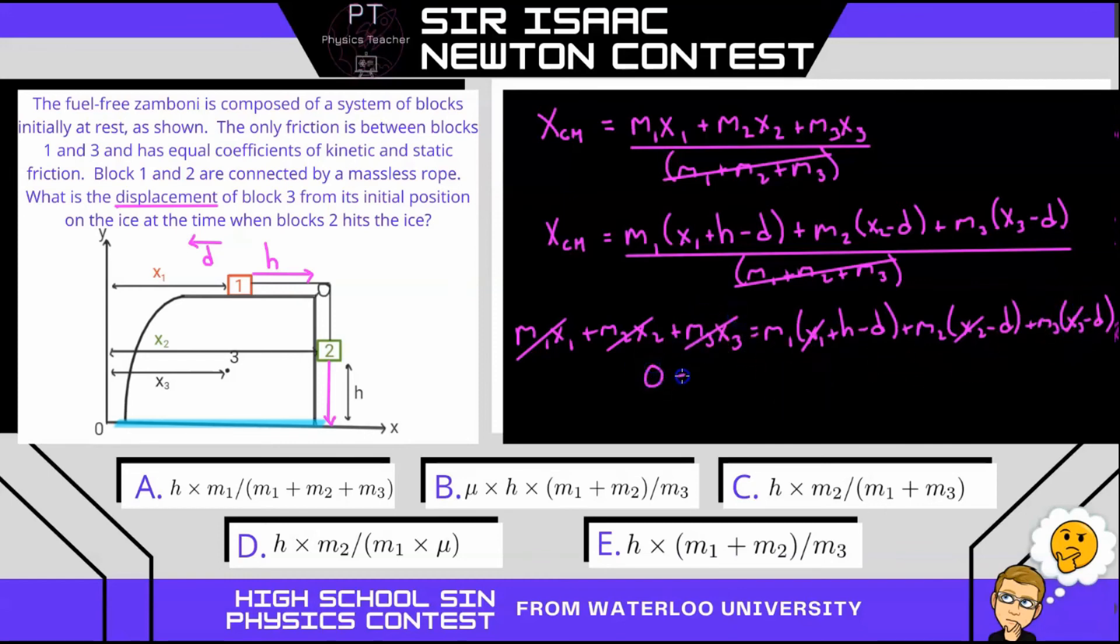So that leaves us with 0 equal to, and we just continue to expand the rest, so we have M1 H minus M1 D plus, well that's going to become a minus once we distribute it through, so minus M2 D and the same thing here, minus M3 D. We can collect like terms, and when we do that, we solve for D, where D is the displacement from the initial position, and it equals to H, or M1 H, all divided by M1 plus M2 plus M3, or A.